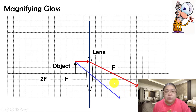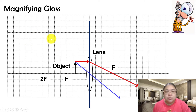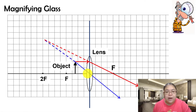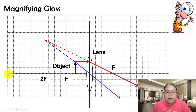Since they diverge, we need to extend the lines. You extend them on the virtual side — part one — and draw them as dotted lines. We extend the first ray (red) as a longer dotted line, and also extend the third ray (blue) as a dotted line. Where they cross, the final image is located.